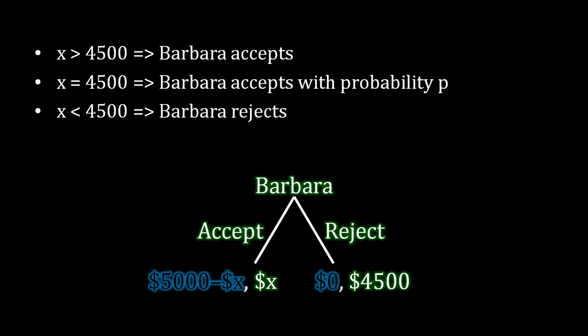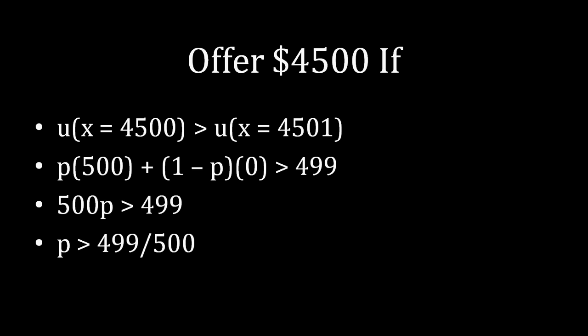Now things grow very complicated very quickly, and this is going to show us eventually why we don't tend to use these discrete versions of ultimatum games when we are studying bargaining. So under those circumstances, under the circumstances where Barbara is accepting with probability p when x is equal to $4,500, Albert is willing to offer $4,500 under the following circumstances.